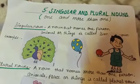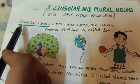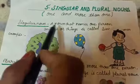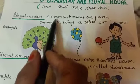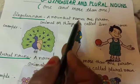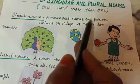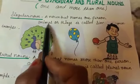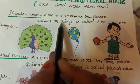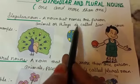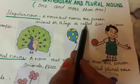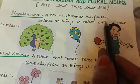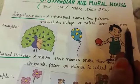Let us come to singular noun. A noun that names one person, animal, or thing is called a singular noun.